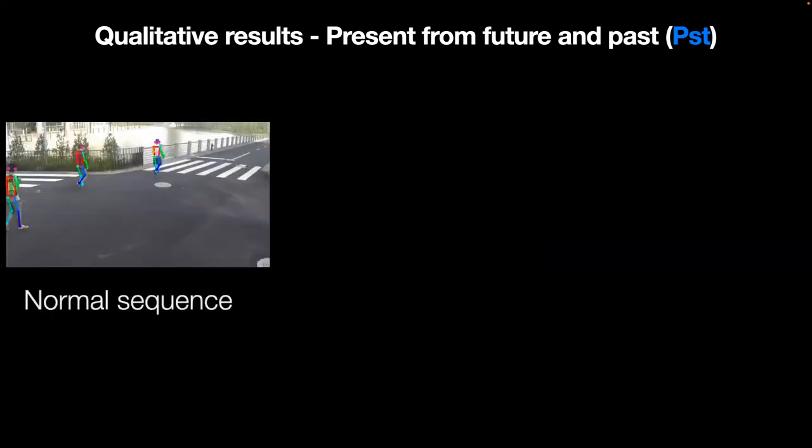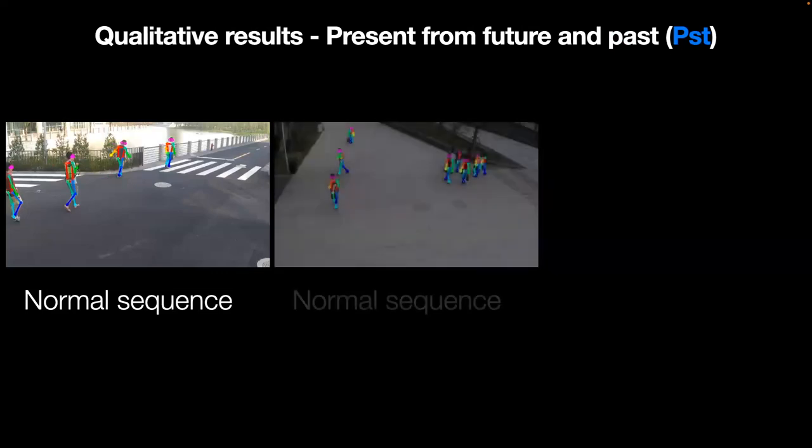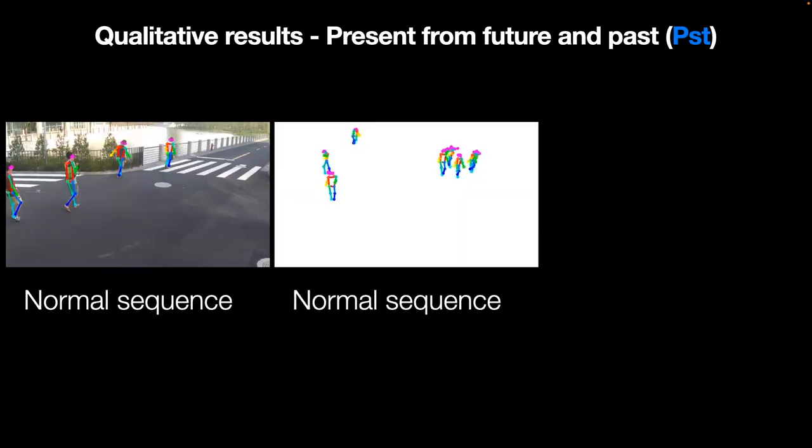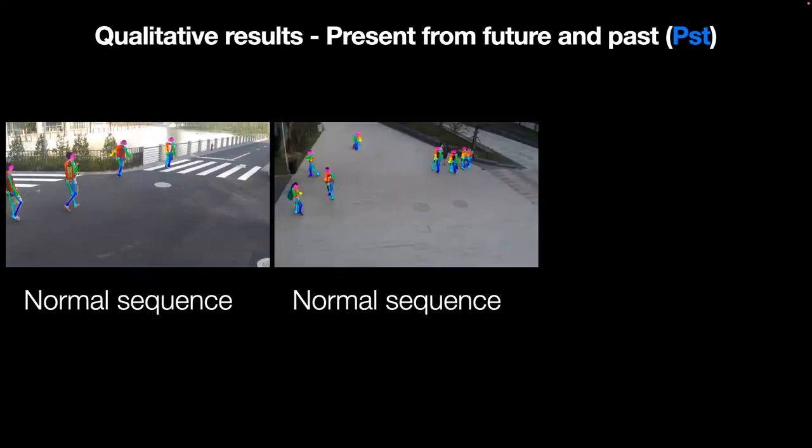We additionally have qualitative results for interpolating present segments from future and past segments for normal sequences and abnormal trajectories.